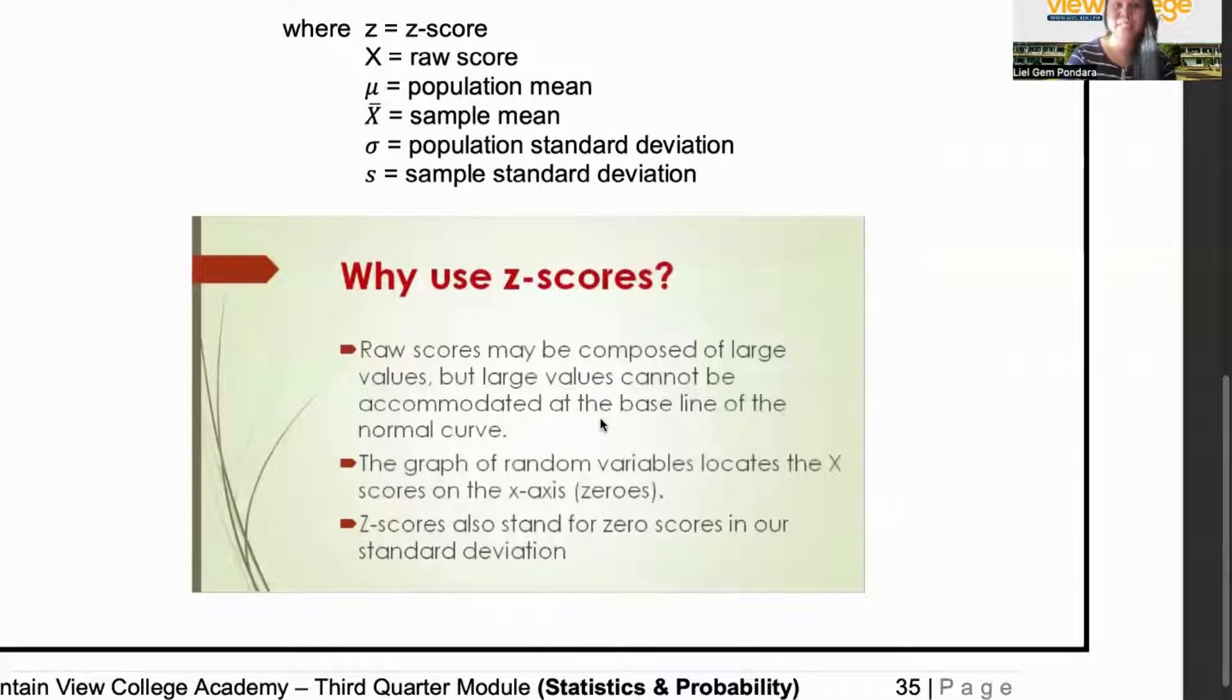Now, why do we use Z-scores? In using Z, raw scores may be composed of large values. But large values can't be accommodated at the baseline of the normal curve. And second, the graph of random variables locates the Z-X scores of the X-axis. And Z-scores also stand for zero scores in our standard deviation. Now, basically, why do we use Z-scores? For example, in a board examination or in an entrance examination for college, we use Z-scores. Why? Because there might be extreme high scores and extreme low scores. And we want to check what is your position based on the average scores. So, when we use Z-scores, we will see how far are you from the mean.